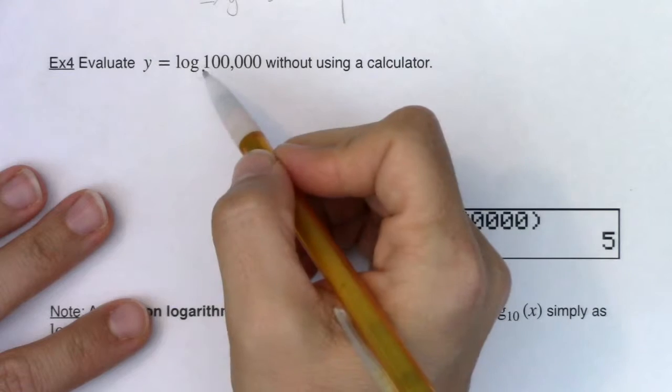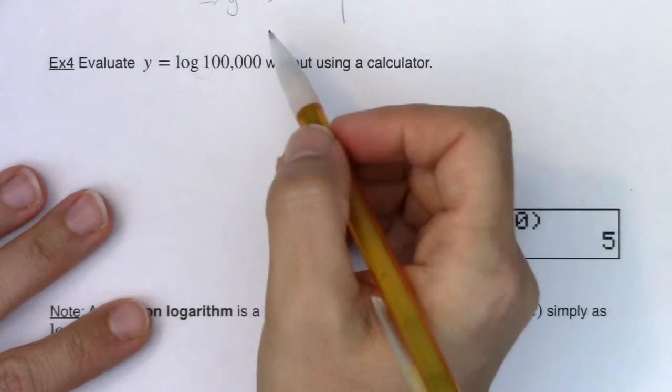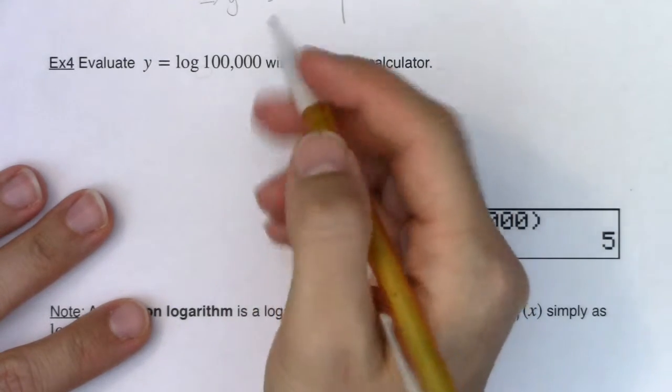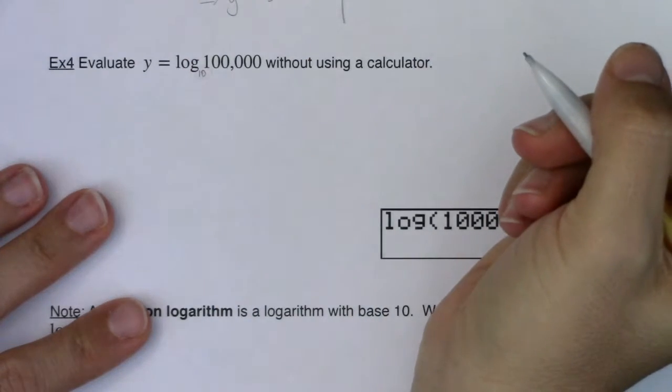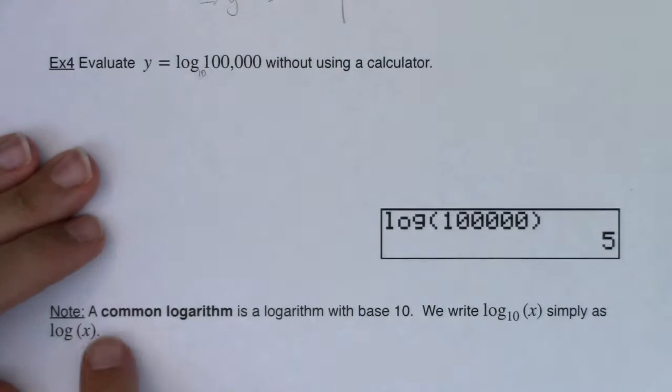And there's something in math called a common logarithm and that's what this symbol represents. If there is no base down here, we will assume that the base is 10 and that's a common logarithm. So a common logarithm is a logarithm with base 10.